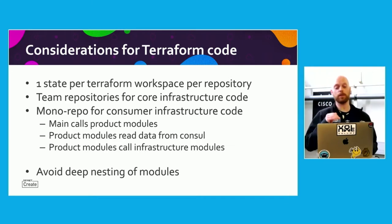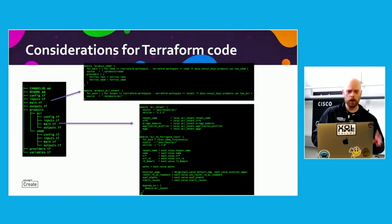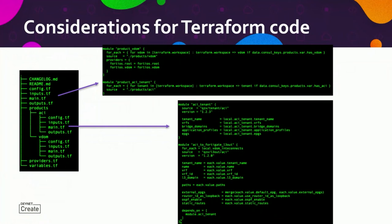Additionally, we have team repositories. There's an ACI team that creates the modules and also creates the infrastructure components such as the L3 paths that get consumed by the consumer code. We recommend avoiding deep nesting of modules. On the left-hand side you've got the monorepo, and you can see there's a products folder under which we have those various products that are modules. In the main file, it just calls each product and sends in whether the product is enabled in Consul, and then you can see the product itself is built out of various modules that it feeds the data into.